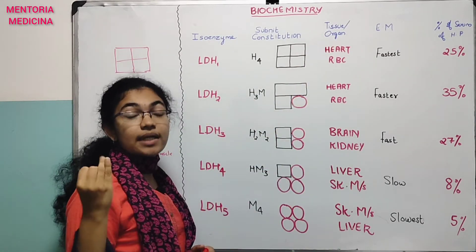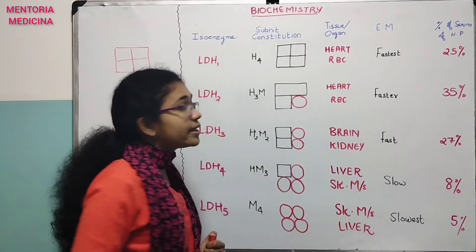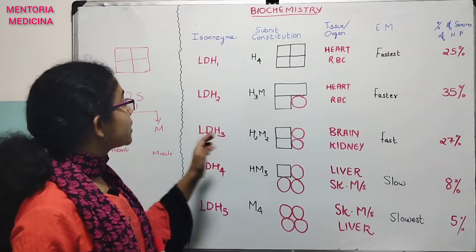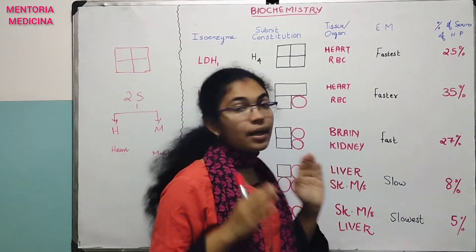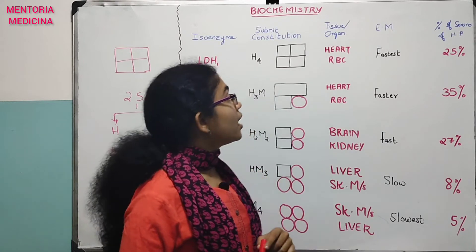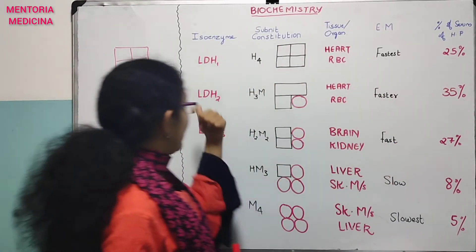Where is it? Heart, red blood cells, RBC. Electrophoretic mobility: the fastest item is LDH1. Normal healthy is 25%. LDH1 is 25%.